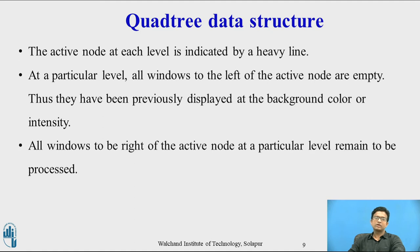The active node at each level is indicated by a heavy line. At a particular level, all windows to the left of the active node are empty. Thus they have been previously displayed at the background color or intensity. All windows to the right of the active node at a particular level remain to be processed. That is, it is declared to be empty or it has to be subdivided as the tree is traversed in a reverse direction.